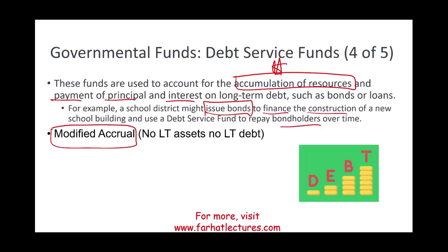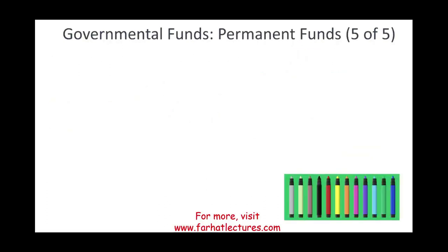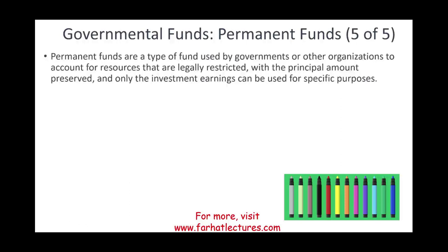Once again, debt service funds use modified accrual. The fifth governmental fund is the permanent fund. As the name suggests, the permanent fund does not go away. We don't care about the fund principal itself — we're going to use its revenue. Permanent funds generate investment revenue like interest and dividends.